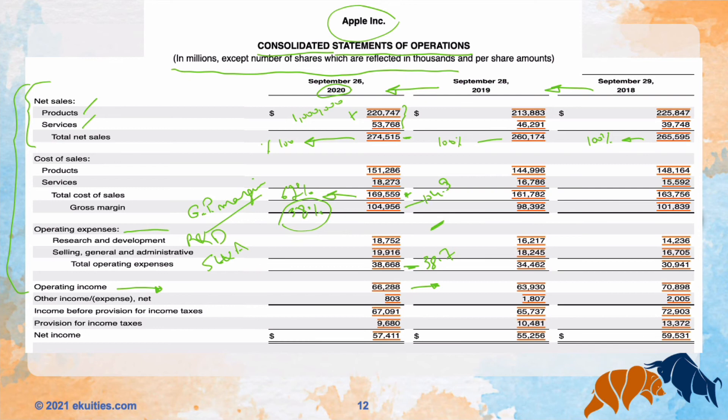You could look at very fancy income statements with huge net income, but the operating income is not impressive and the profit margin is not impressive. This is what you care about — the operating income, the income generated from the core business. And then we have other income or expenses — here you could find interest income, interest expense, investments, depreciation, and so on. This is the net of all those items, 803 million. And then you have income before tax, you deduct the tax, and you get the net income.